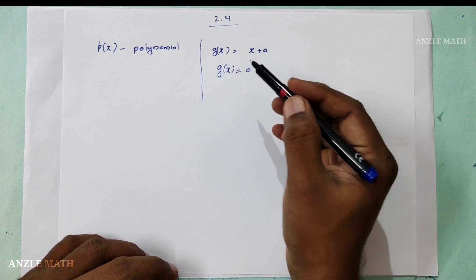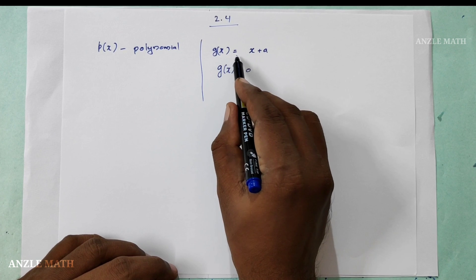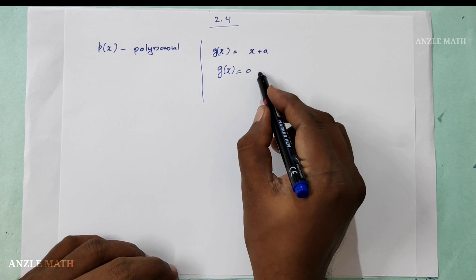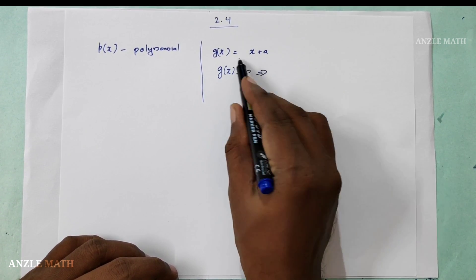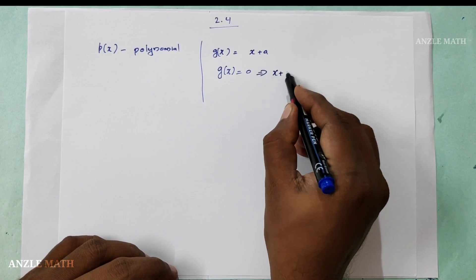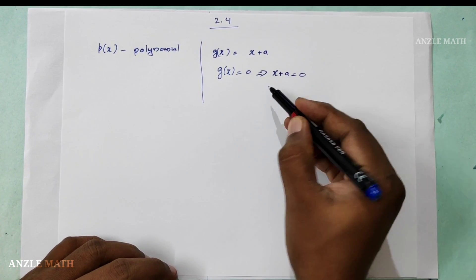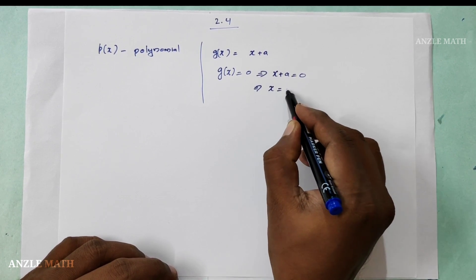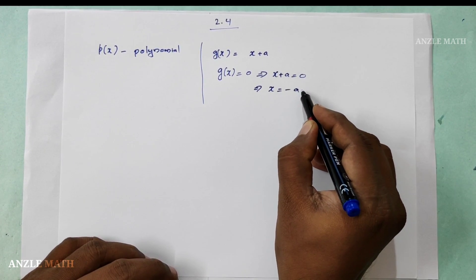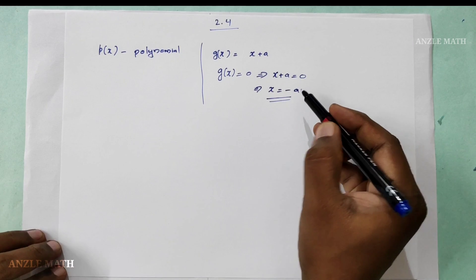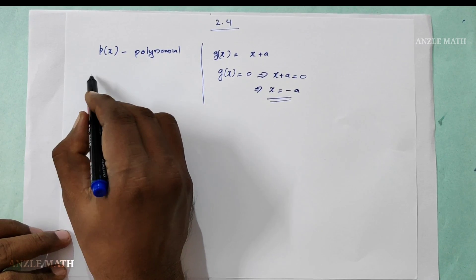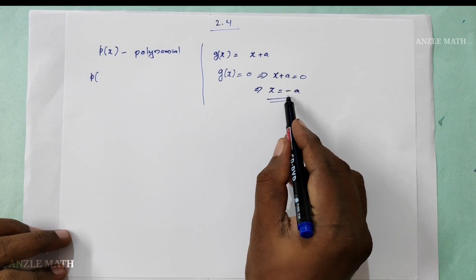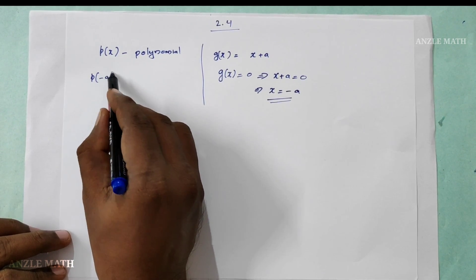The first step: g of x is equal to x plus a. What is g of x? x plus a is equal to 0. We will check x and its value. x is equal to minus a. We will check: g of x is equal to p of x, and this is p of x evaluated at minus a.